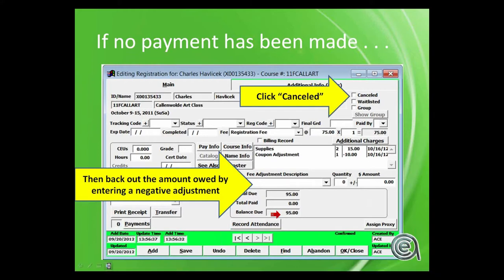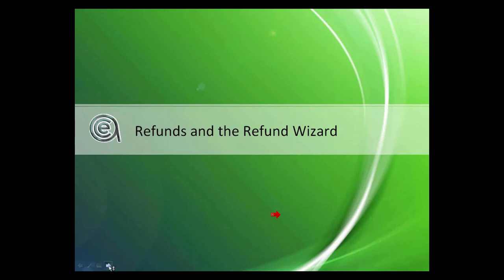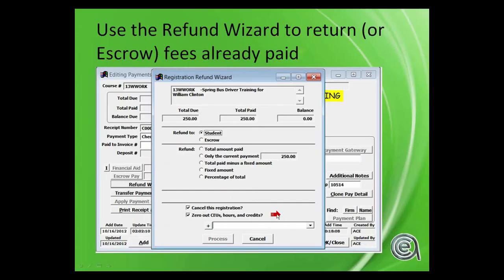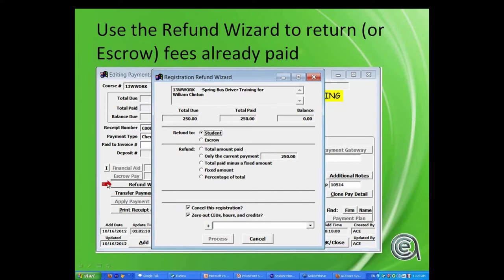Refund wizard. When you're at the payment screen, you'll see in the lower left a refund wizard. Generally, when you're canceling a registration that has payments made, the best way to go is to use the refund wizard, because it allows you multiple options: refund the student, refund escrow, refund the total amount, or a fixed total. And the nice part is it'll automatically cancel the registration for you and zero out the CEUs and hours.